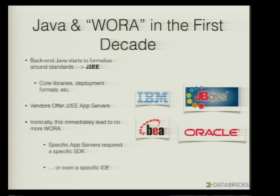The next step was to formalize this back-end use of Java with something called Java EE, where basically we add a lot of core libraries and deployment formats. This is where the WAR file was born, or the infamous EAR file, which no one actually used. Java was really starting to show its strength. But ironically, what happened was that each vendor created its own app server, which required basically its own SDK. And sometimes you actually had to use their IDE. And so we kind of lost the whole principles of write once, run anywhere — you basically had to write once for just that version of an app server.